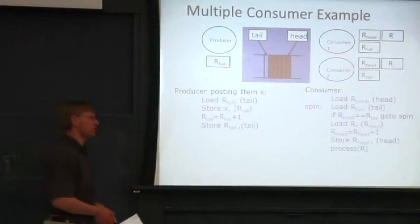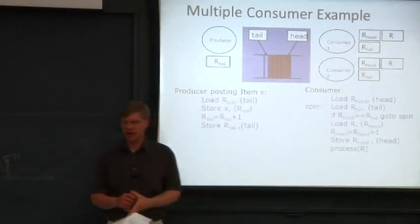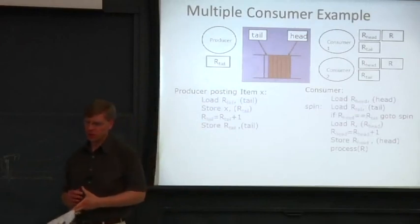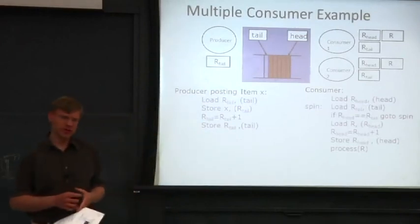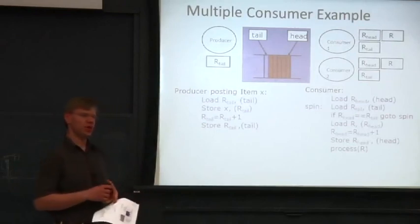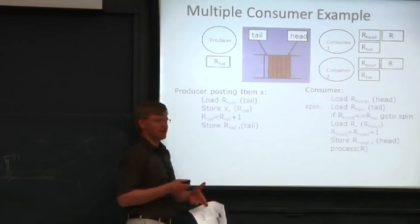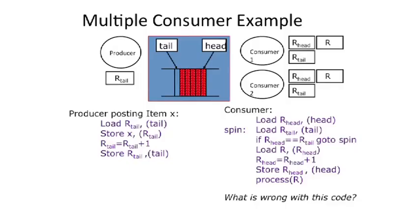So this brings us up to what we talked about right at the end of class last time, which was looking at an example where you have a sequentially consistent processor. And we take a piece of code that we had talked about at the beginning of class last time and ask ourselves, does this still work? And what we're going to do is instead of having one producer and one consumer, we're going to have one producer and two consumers, or multiple consumers.